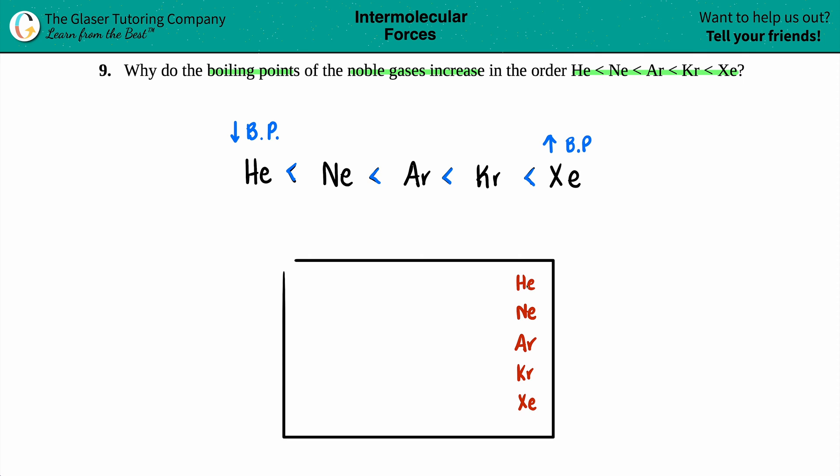So they're all in the same group. And it seems that if we take the same trend as we're going down the group, and as we're going down the group, we are increasing in boiling point. Why is that?